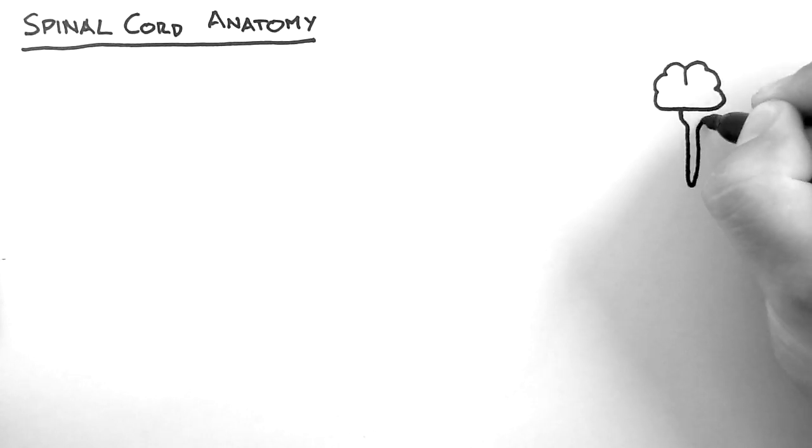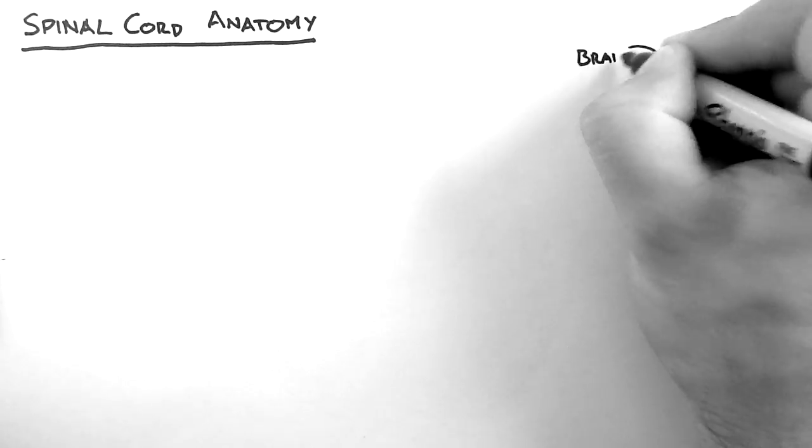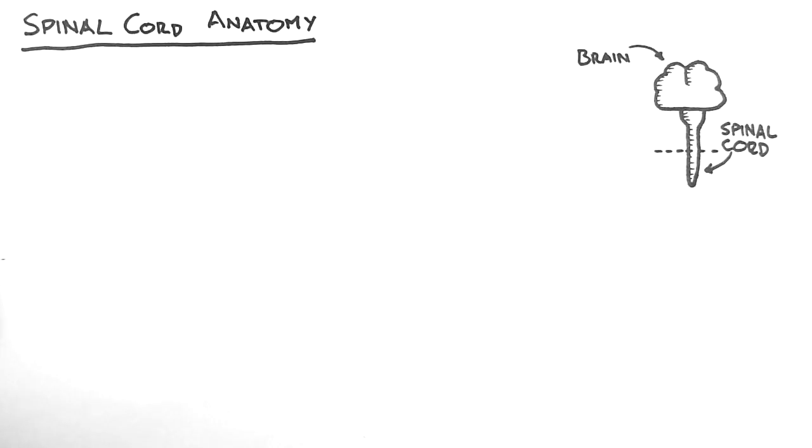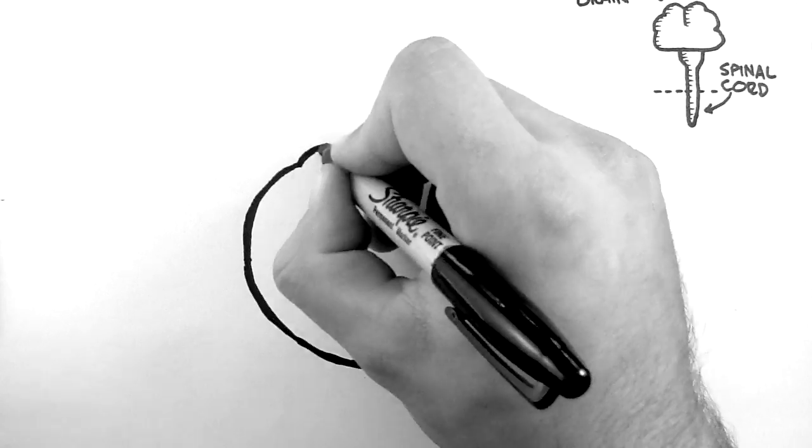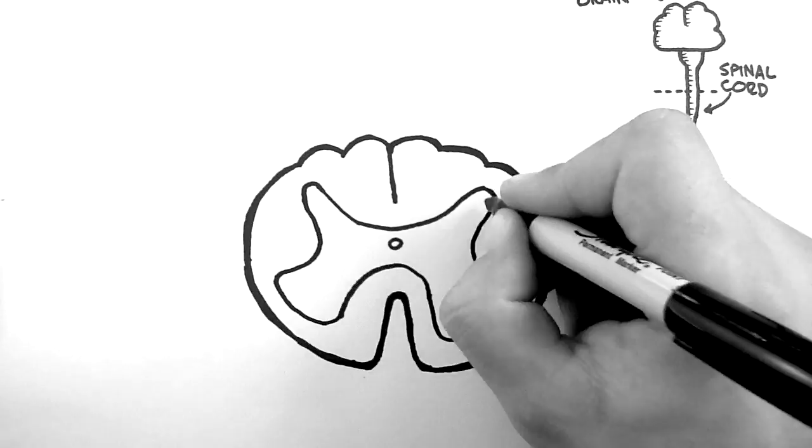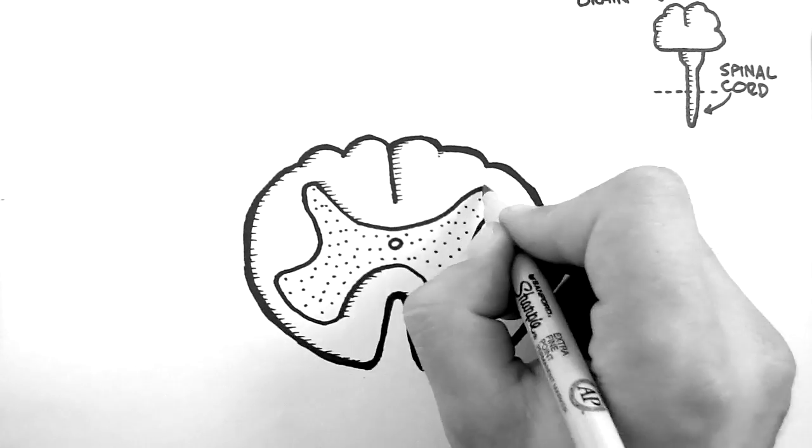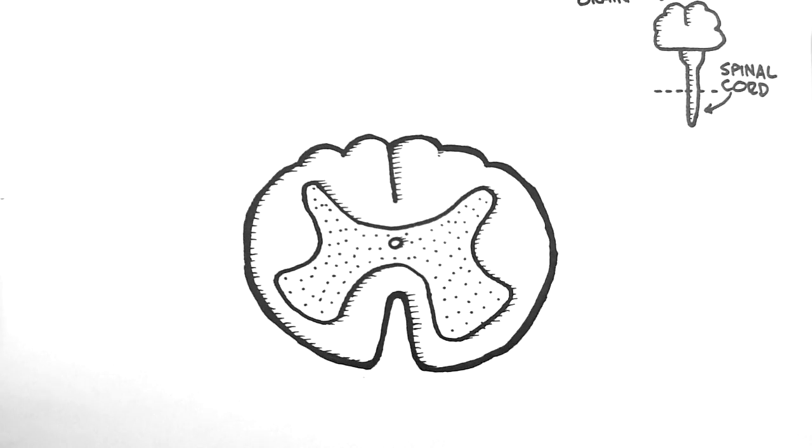So let's begin by taking a cross section of the spinal cord. We are going to cut through here like this. And this is what we see.